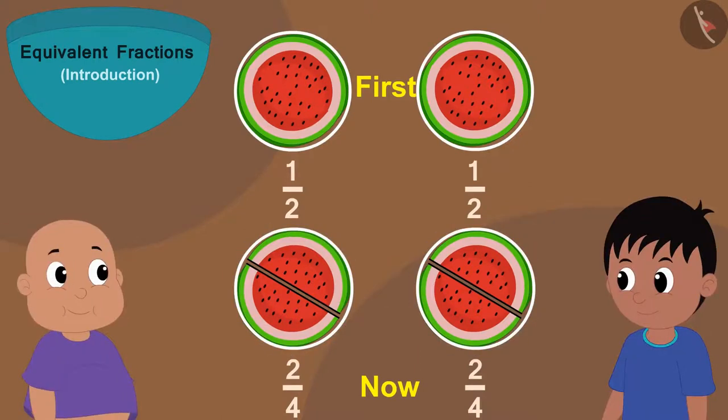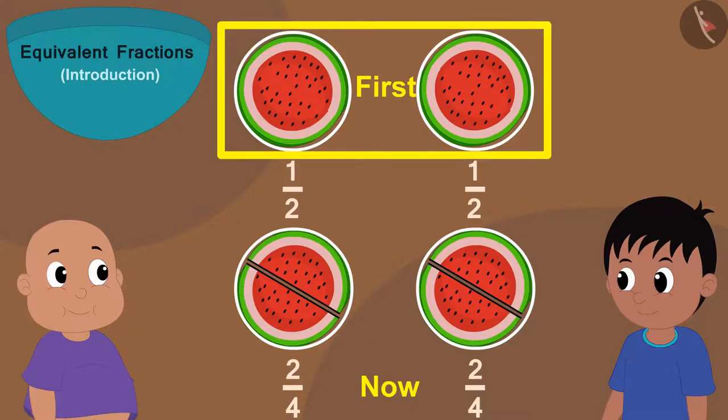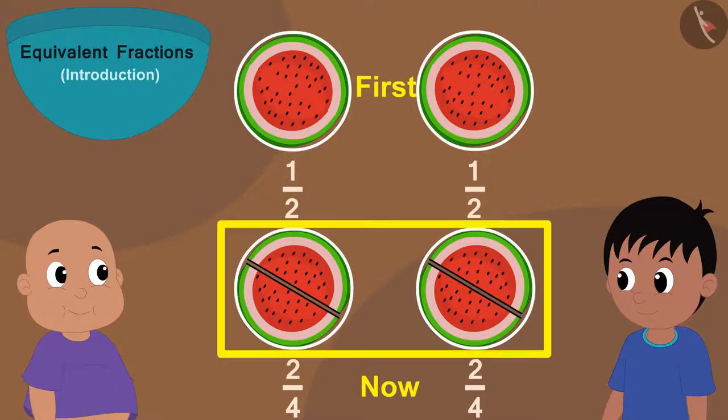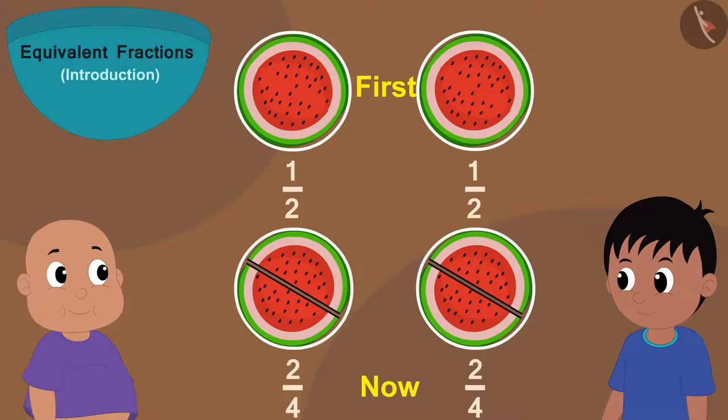Earlier, Raju and Bablu were getting one part out of two. That is, one by two parts. And now, they are getting two parts out of four. That is, two by four parts. Here, this one part is equal to these two small parts.